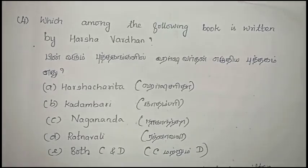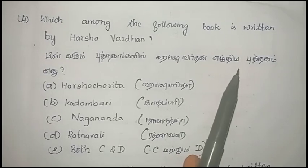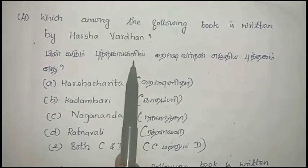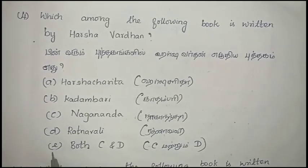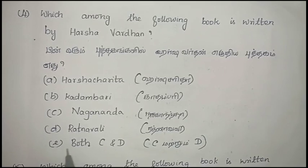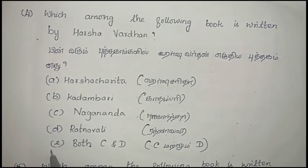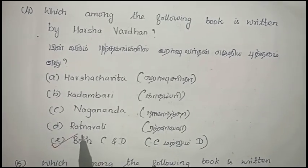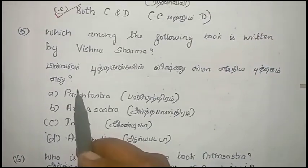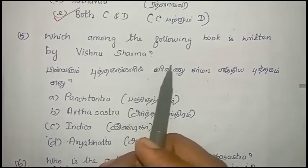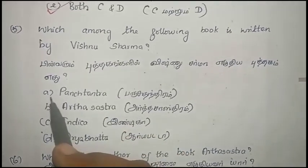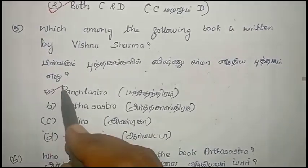Next question: Which among the following books is written by Harsha Vardhana? Answer is Option E, both C and D — Nagananda and Ratnavali. Next question: Which among the following books is written by Vishnu Sharma? Answer is Panchatantra.